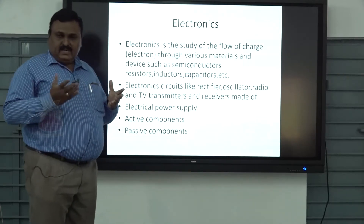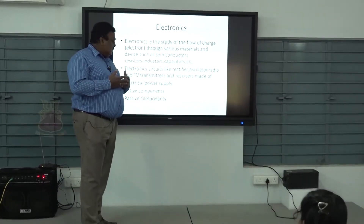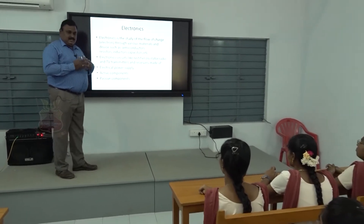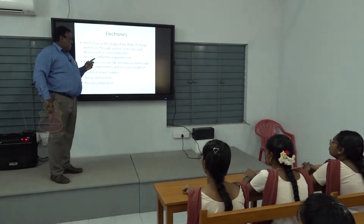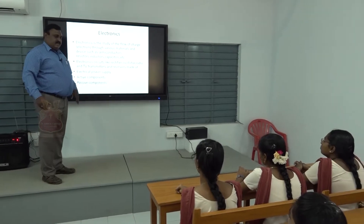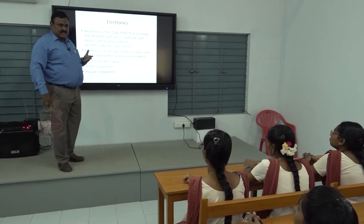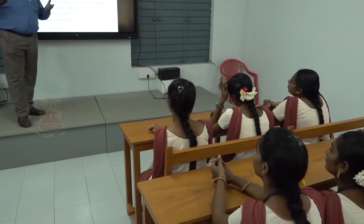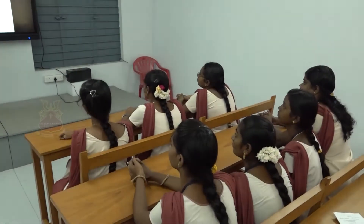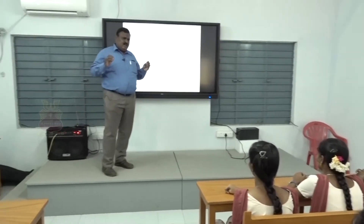Rectification converts AC into DC. Alternatively, the inverse term is inverter - that is the difference between rectifier and inverter. Then oscillator - we have studied about so many oscillators. An oscillator generates oscillating waves. There are so many oscillators in electronic circuits. Radio and TV receivers are all made up of electronics and its circuits.